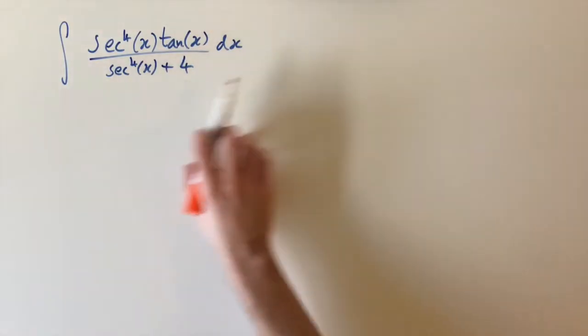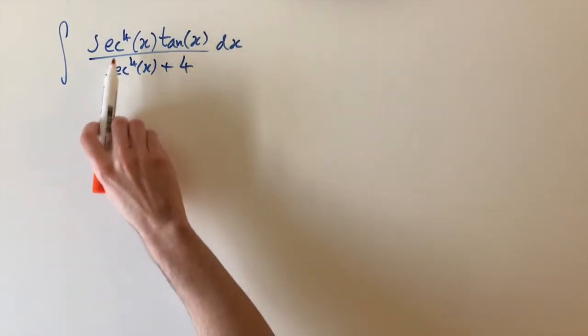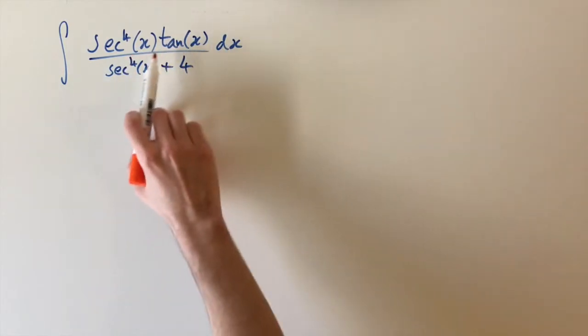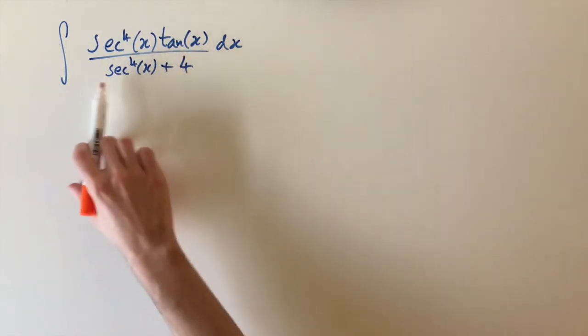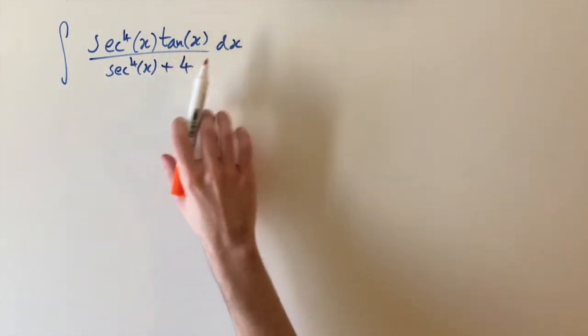Okay, so we have this nice trig integral. We have the integral of sec to the power of 4 of x times tan of x divided by sec to the power of 4 of x plus 4 dx.